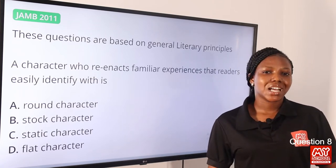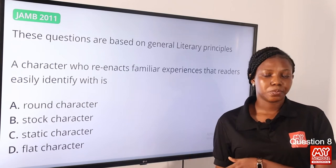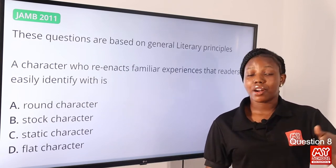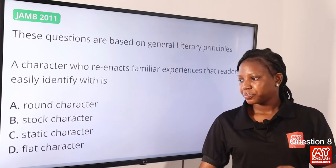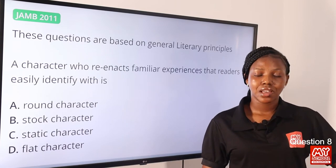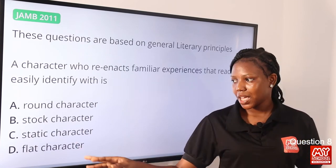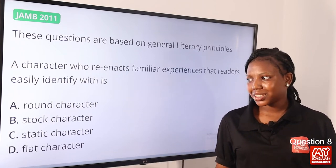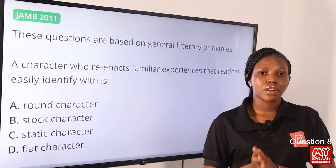We have the protagonist and major characters exhibiting the round character. Within a narrative, there are four character types: flat and round — which relate to how well we know the character — and static and dynamic, which relate to the character's growth. So the answer to this question is option A, round character.